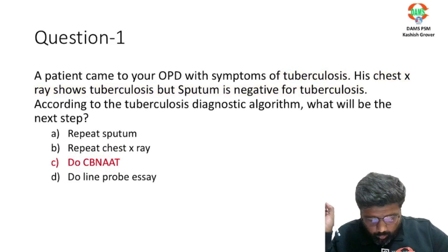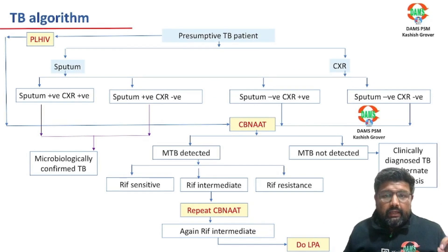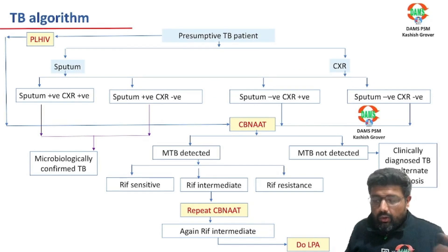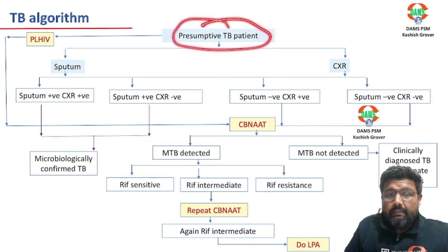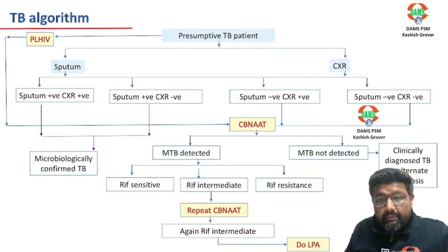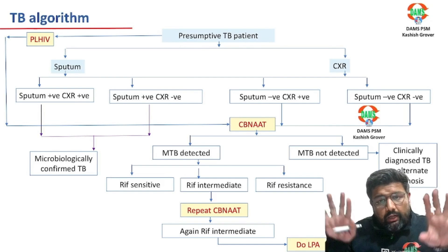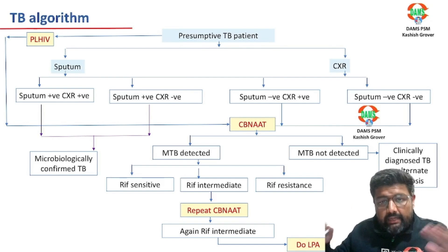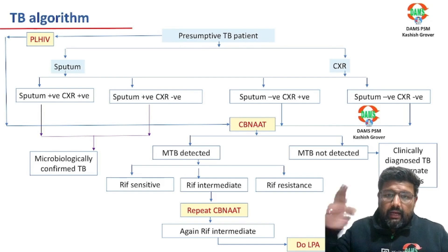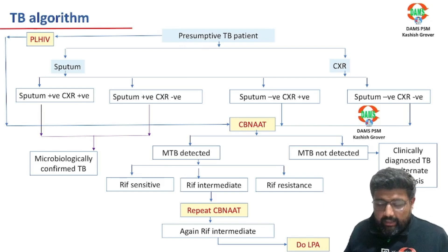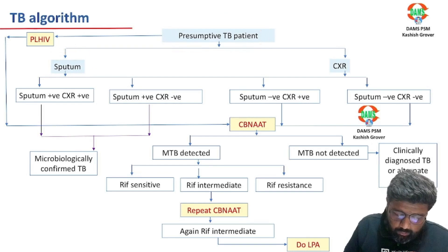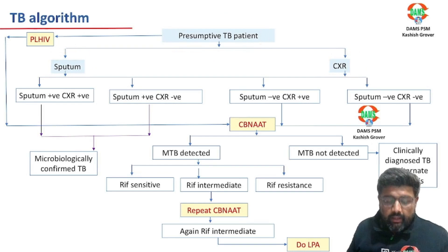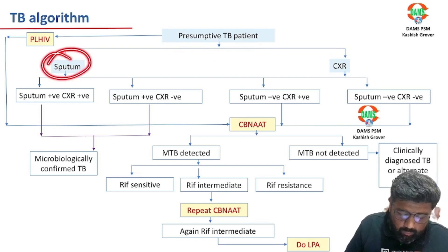Let us quickly revise all the guidelines. If you have a presumptive TB patient — that is, a patient who is not confirmed yet but all signs and symptoms point to TB — you order one sputum and one chest X-ray.